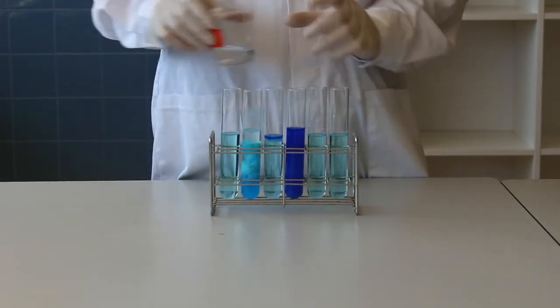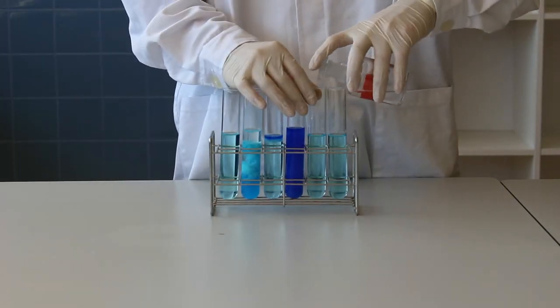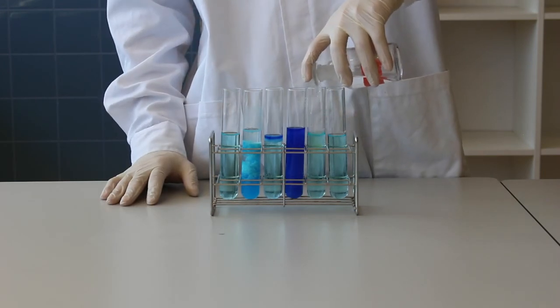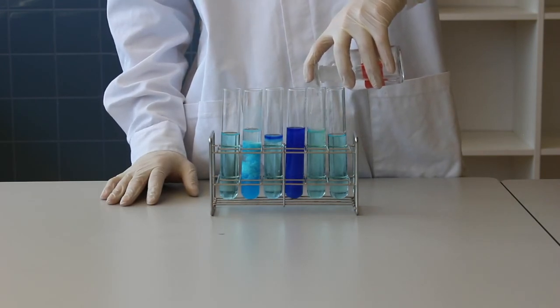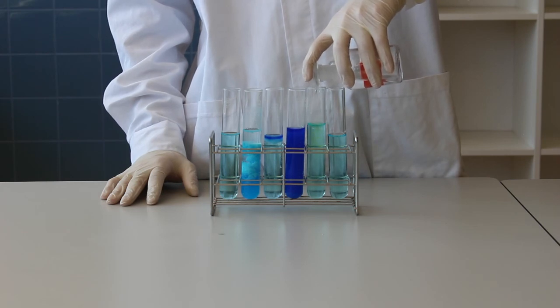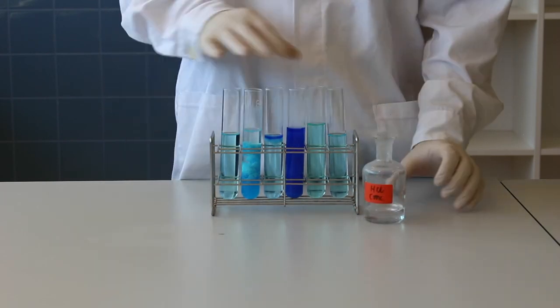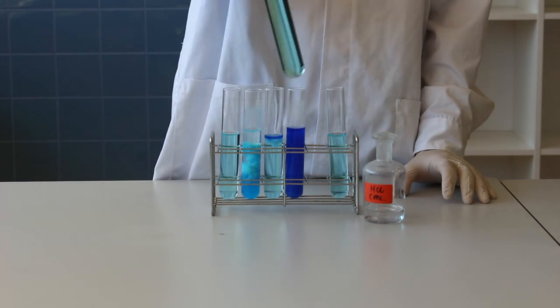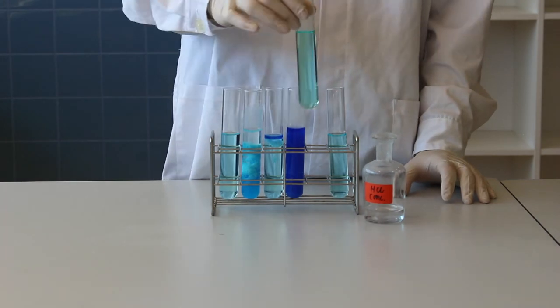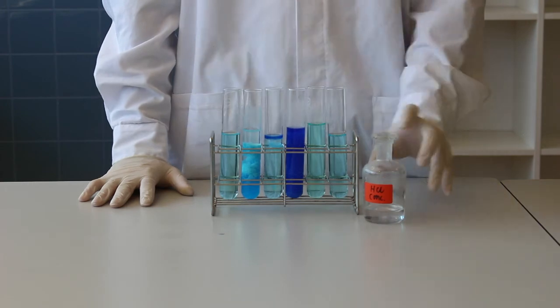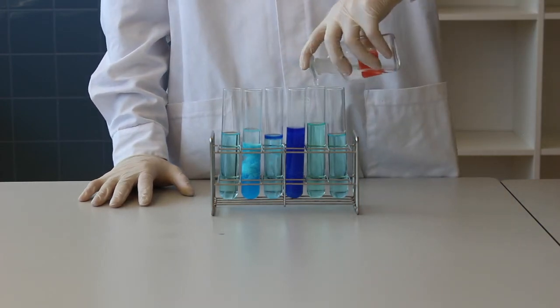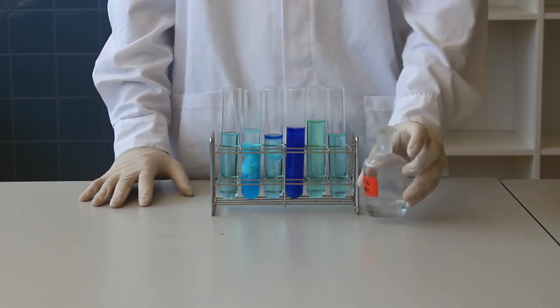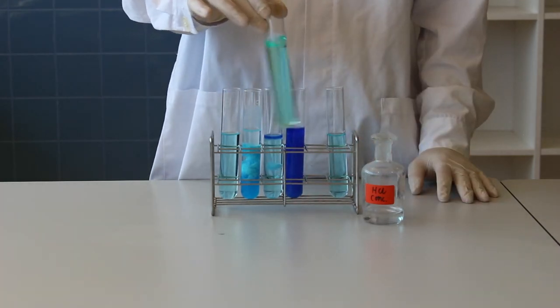Now we add concentrated hydrochloric acid to a solution containing hexa-aqua copper ions. The six water molecules will be replaced by four chloride ions. This reaction is reversible, and due to this, you get a mixture of colors due to both of the complex ions. The hydrochloric acid will create tetrachlorocuprate ions, which have been described as olive green or yellow.